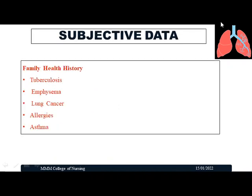Coming to family health history, any previous history of communicable or hereditary diseases should be noted. If the patient has a family history of respiratory illness like tuberculosis, emphysema, lung cancer, allergy, or asthma, these should be noted as there is a chance of genetic disorders being transferred from one generation to another.